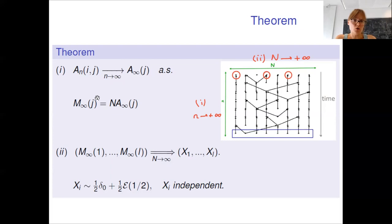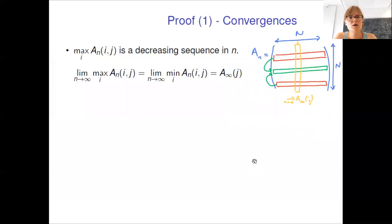The limiting weight of any ancestor is a random variable and we prove that when the number of individuals large N goes to infinity, this weight converges in law towards a random variable, which is either equal to zero with probability one half or follows an exponential law with parameter one half. We also prove that the weights of a finite number of ancestors are independent when the number of individuals goes to infinity.